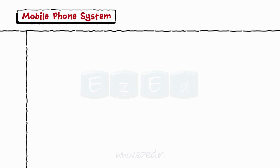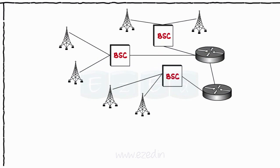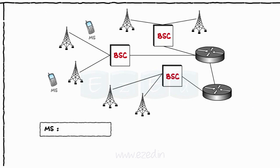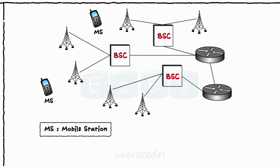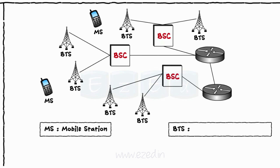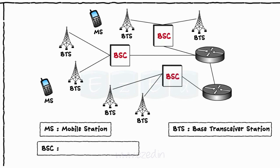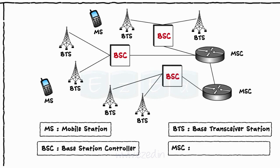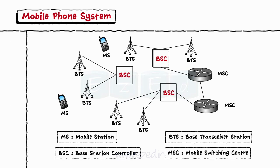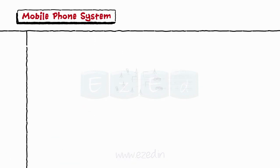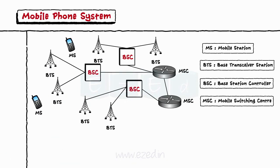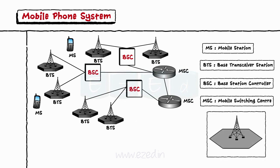Let's study the mobile phone system now. The basic structure of the mobile phone system is as shown, where MS means mobile station, BTS is Base transceiver station, BSC is Base station controller, and MSC is mobile switching center. In this diagram, MS is nothing but the mobile phone of a user. Every cell has its own Base transceiver station at its center.